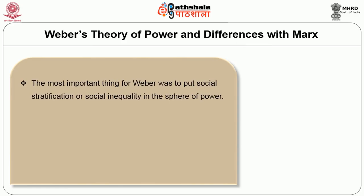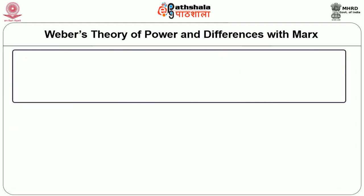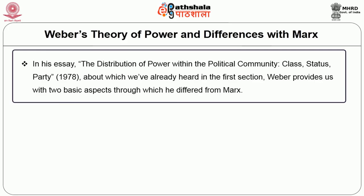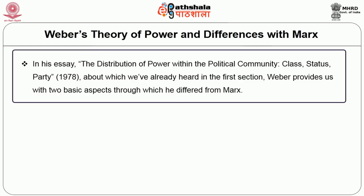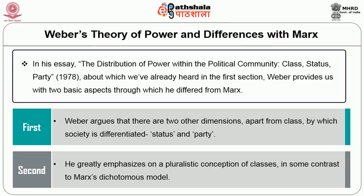Weber's theory of power and differences with Marx: the most important thing for Weber was to place social stratification in the sphere of power. His starting point differed from Marx, and his emphasis on power influenced various scholars including Michel Foucault. In his essay on the distribution of power within the political community — class, status and party — Weber provides two basic aspects of difference from Marx: first, there are two other dimensions apart from class (status and party); second, he emphasized a pluralistic conception of class contrasting Marx's dichotomous model.